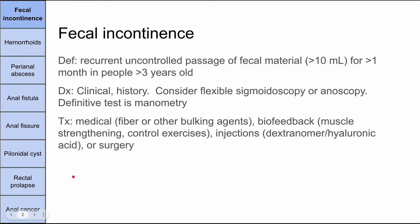First, fecal incontinence. This is defined as recurrent, uncontrolled passage of fecal material, usually at least 10 milliliters for at least one month in people at least three years old. You can diagnose this with just a clinical history and exam. You can also consider a flexible sigmoidoscopy or anoscopy, and the definitive test is manometry to measure the pressures in the anorectal region and how well the sphincters are working.